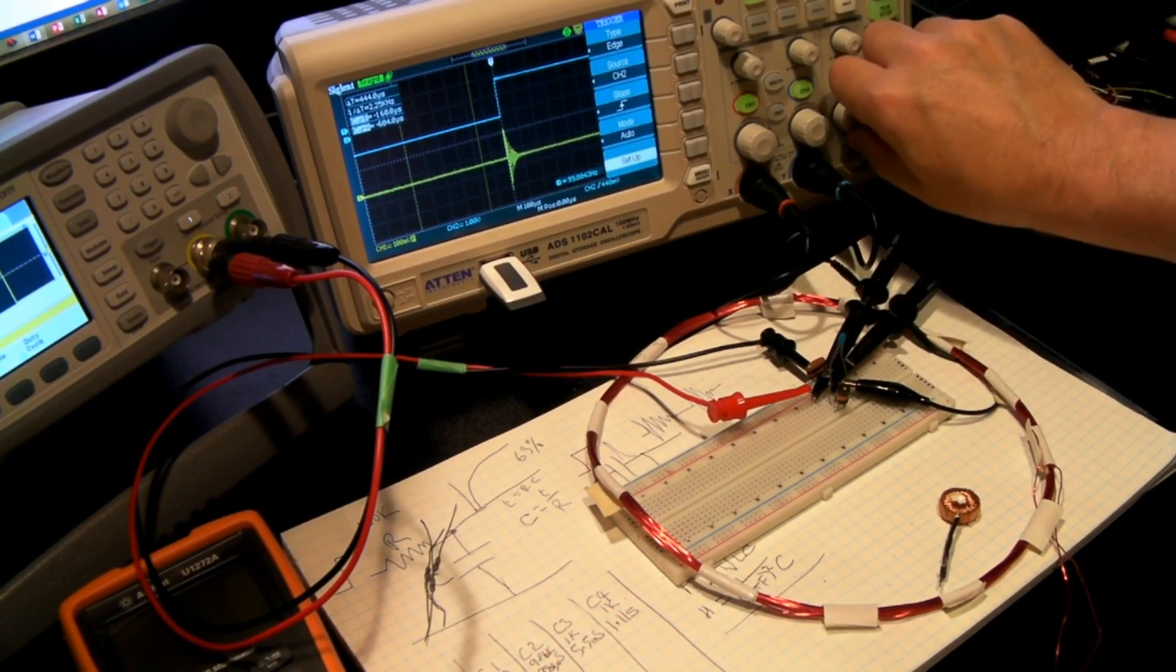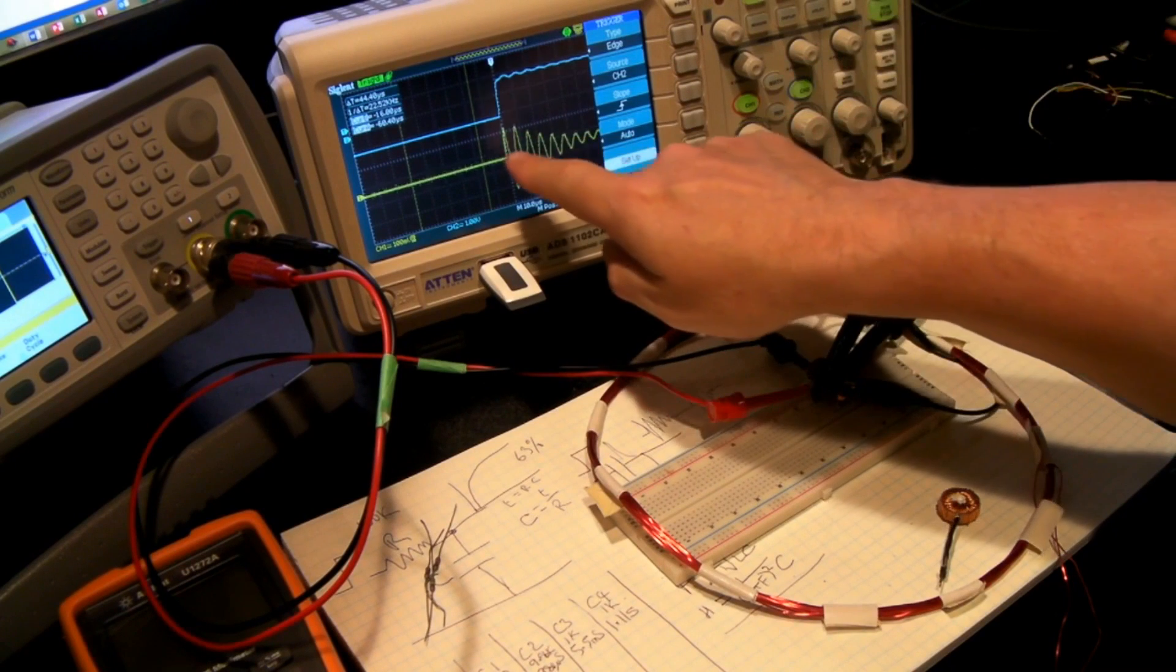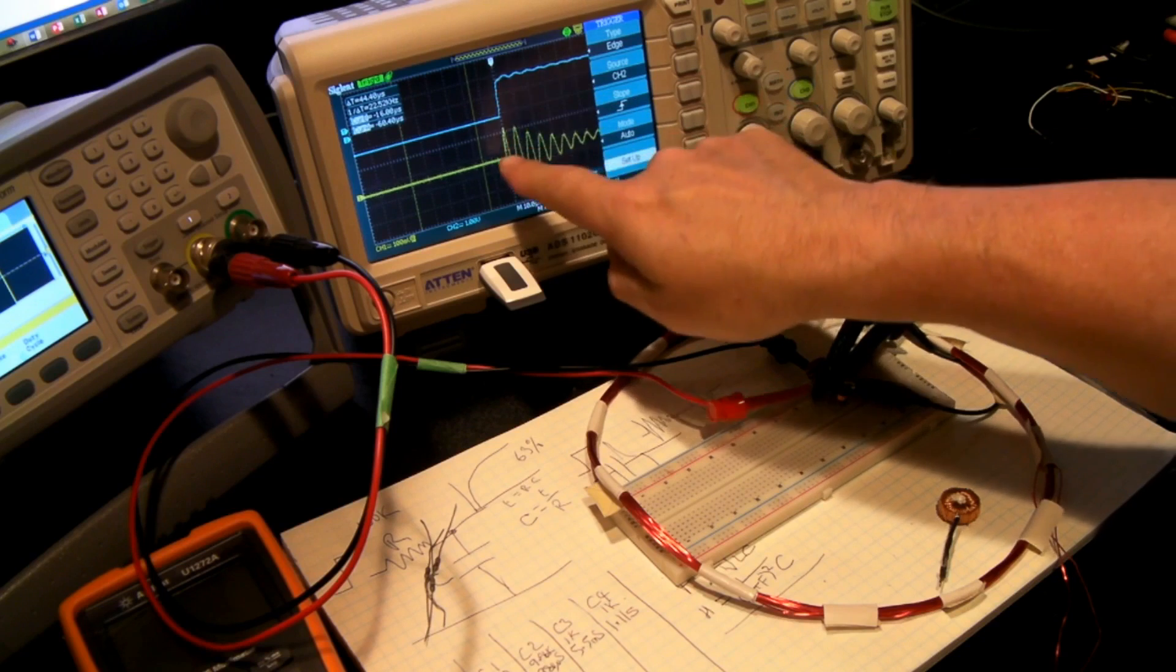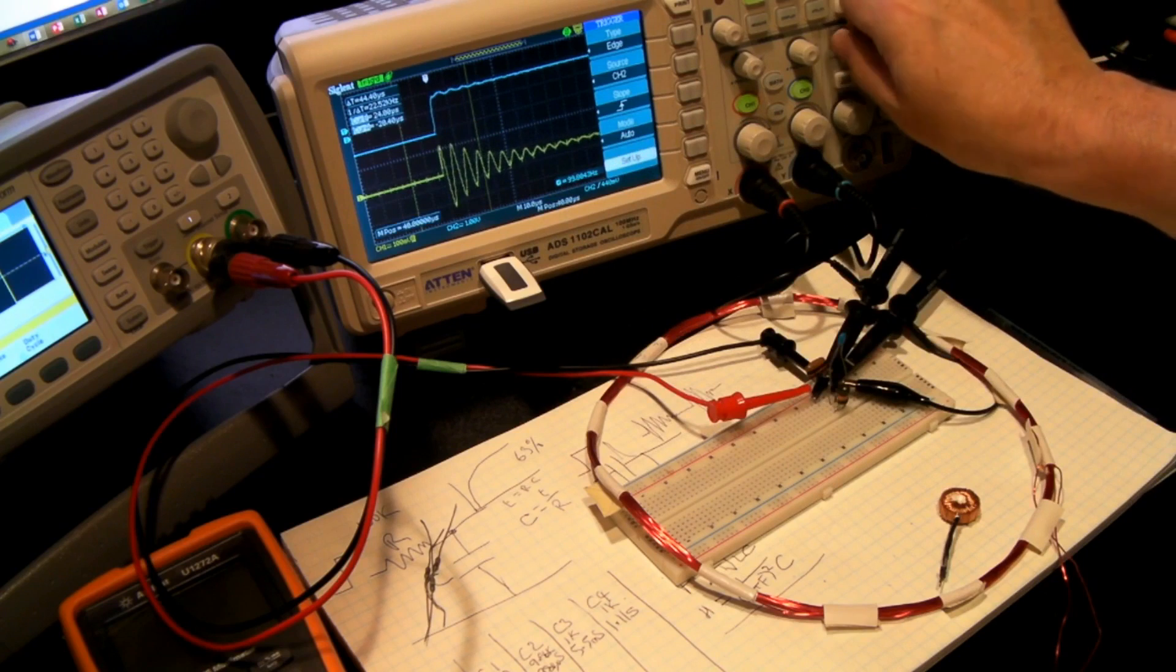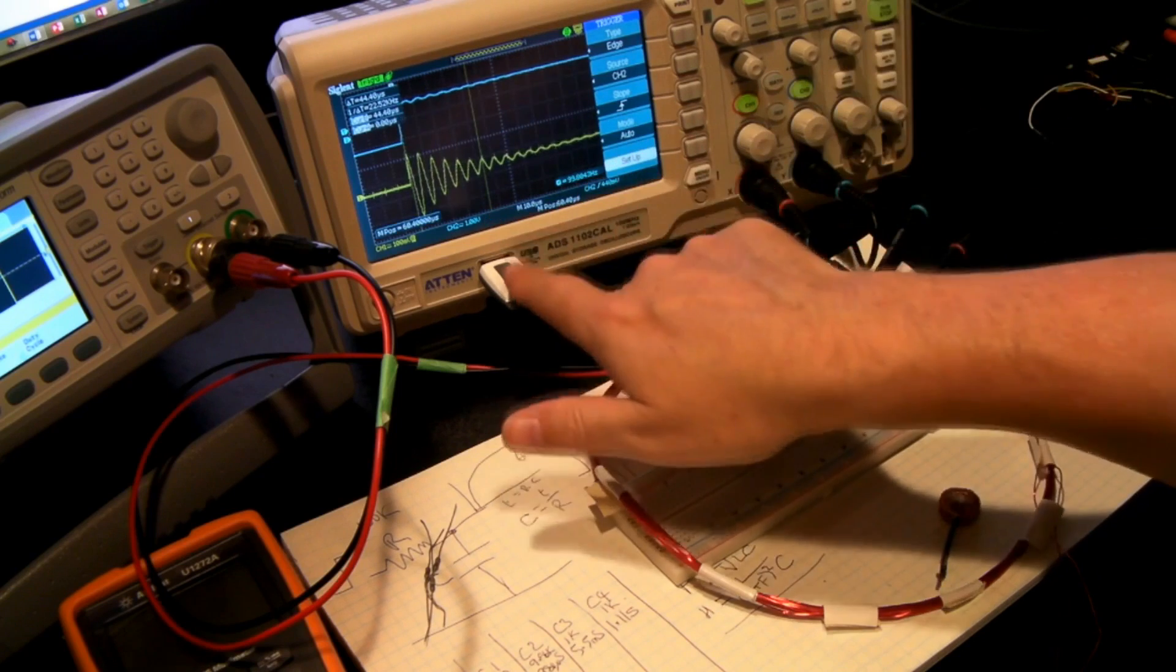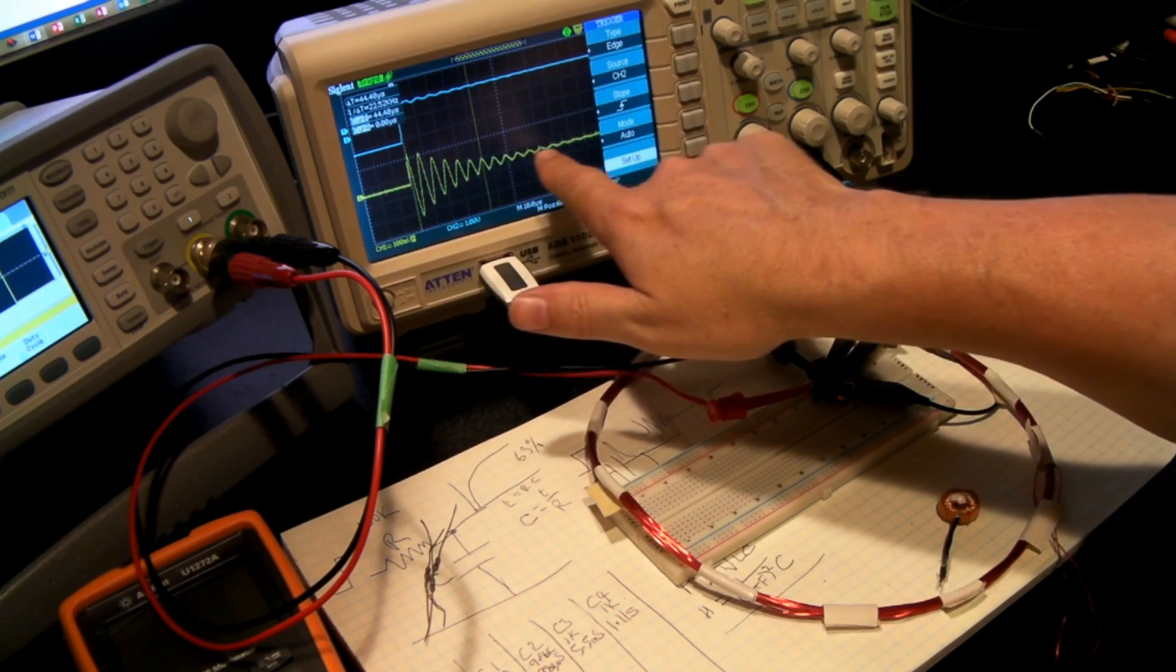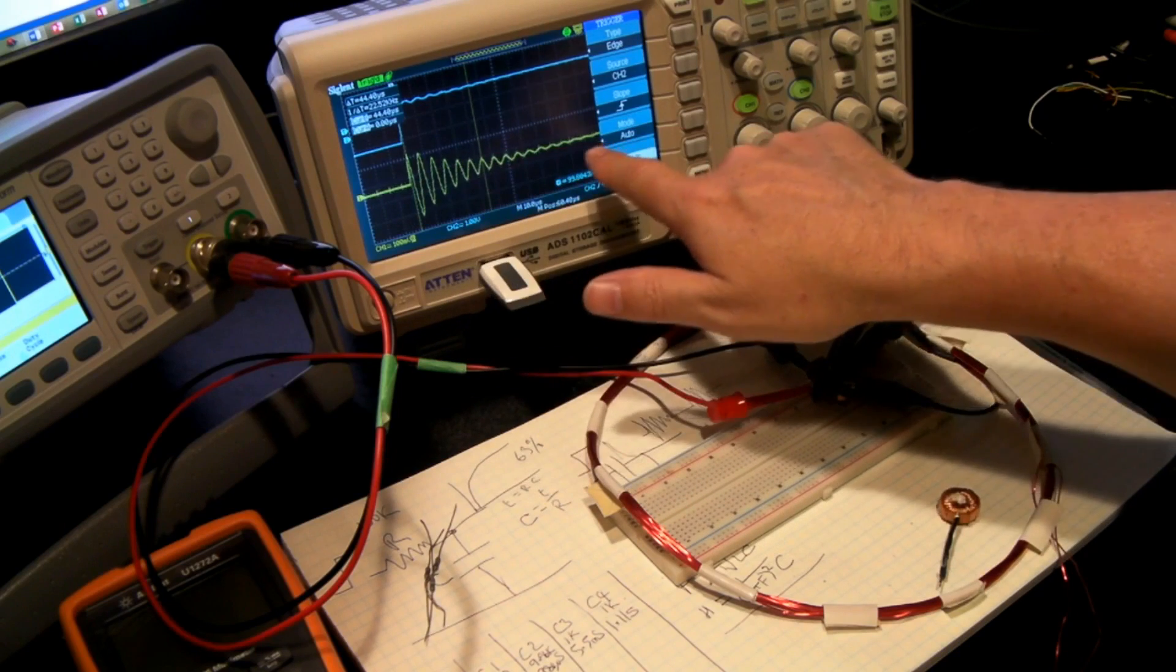And if I increase the bandwidth even further, you'll see that here is this oscillation. So this is the rising edge of the square wave going into the circuit. It starts the ringing. And if I just slide this across, you'll see that after, let's have a look, 10 microseconds, so 10, 20, 30, 40, 50, 60, 70, 80, maybe 100 microseconds, it's disappeared.